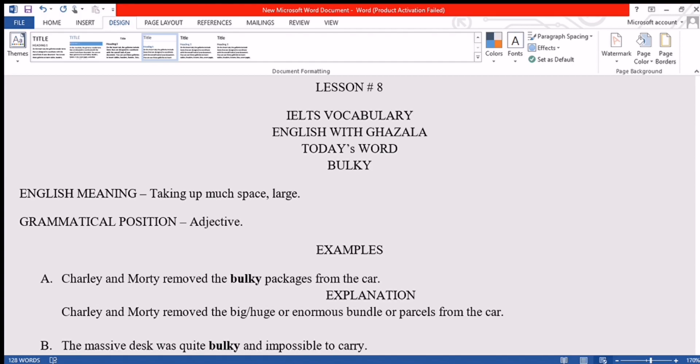Number one: a thing which occupies a large area. We use the word bulky for this. And number two: a person having excess body mass, especially muscles. A person who is very muscular, we can use the word bulky for them as well.